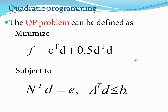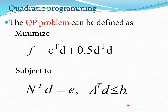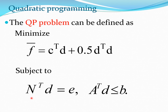We can define the QP problem as follows. You minimize the function F-bar which is C-transpose D plus half D-transpose H D, where the H matrix is a unit matrix and therefore you have a positive definite H matrix. You minimize this function subject to constraints: equality constraints and less-than-type inequality constraints. Here C is the gradient, D is the search direction, and matrices N and A contain the coefficients of these two constraints, with right-hand sides given by E and B respectively.